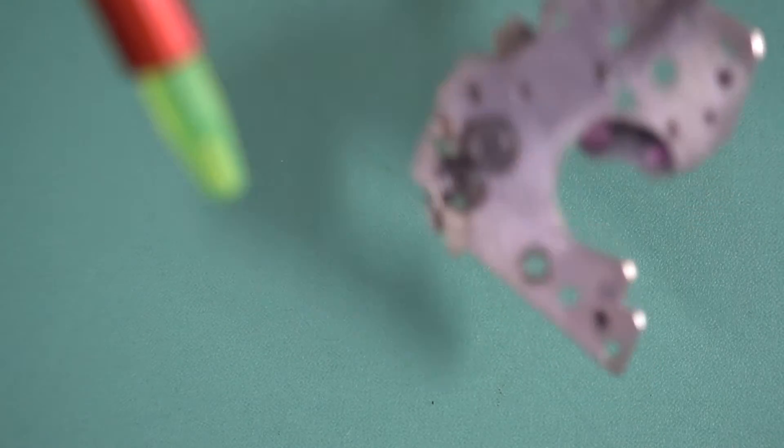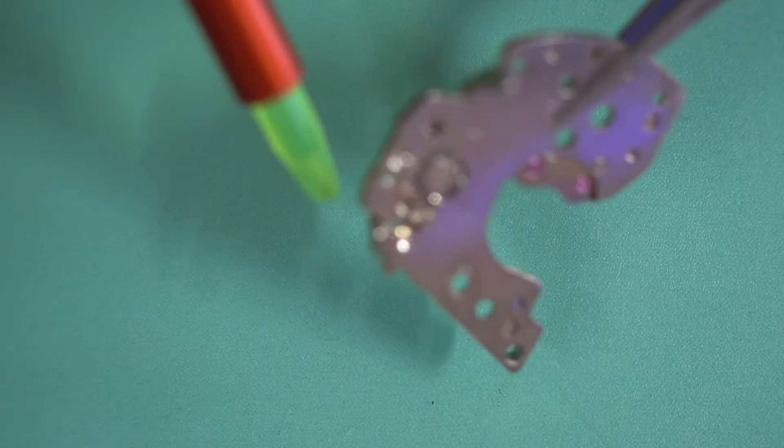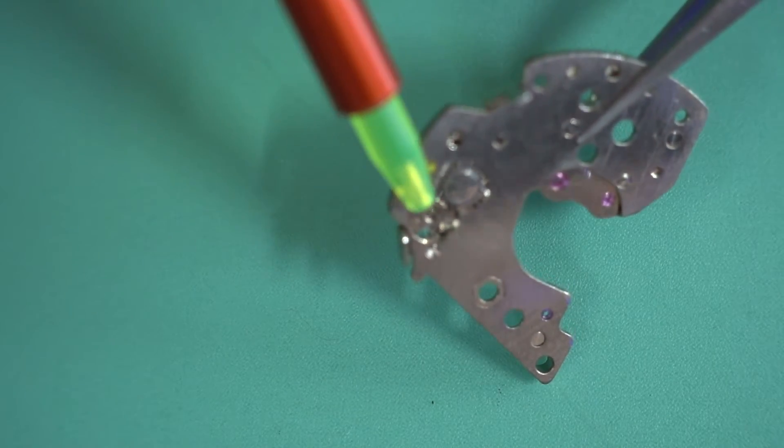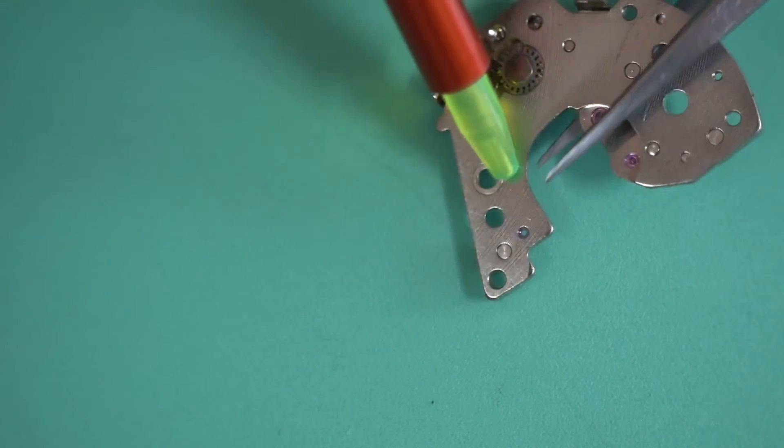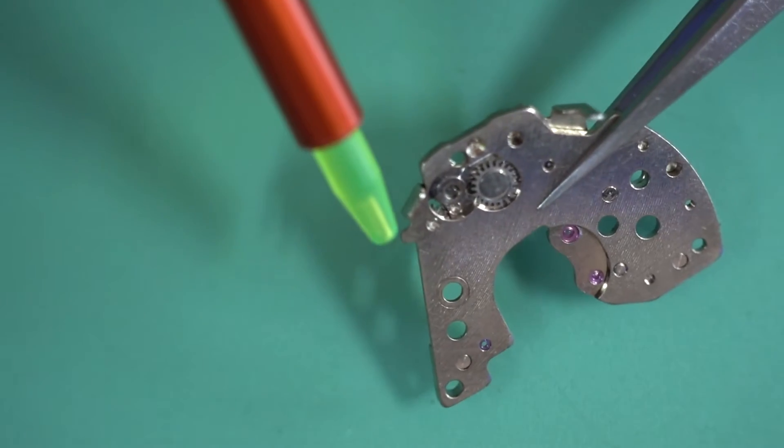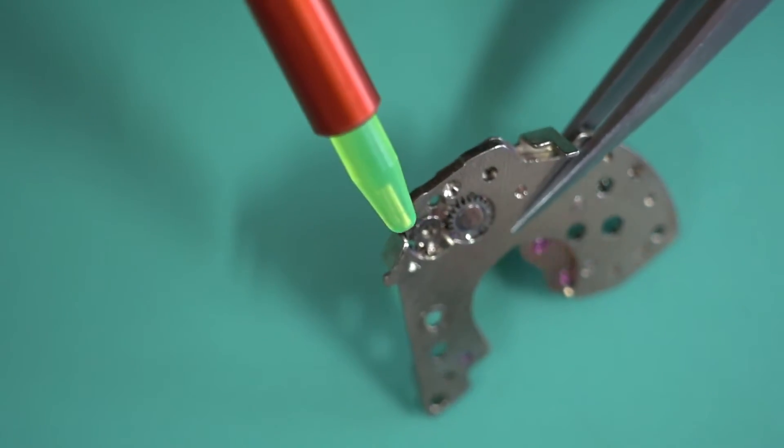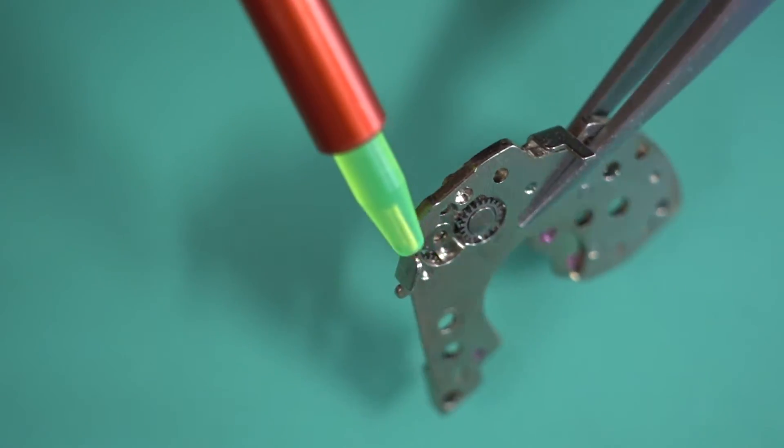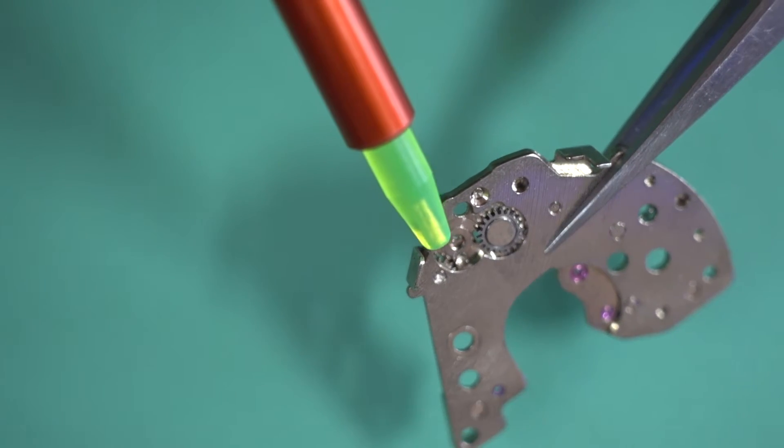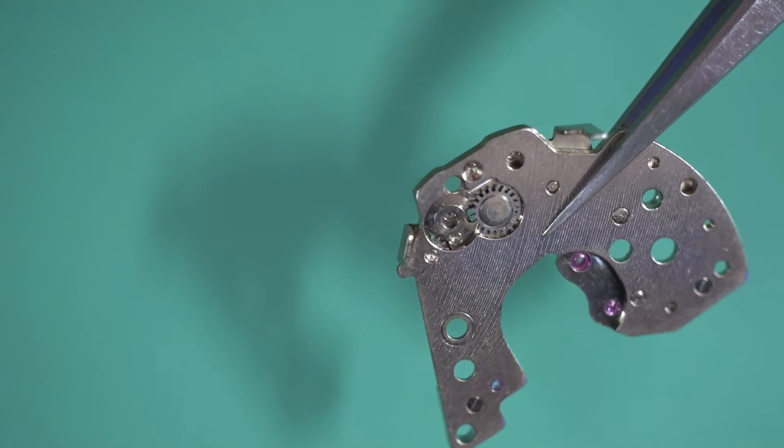So I think the better way to go is just to replace the plate. And if you look at the bottom side of the plate on this guy here, which is the unmolested one, you will see that the rivet, just at a bit of an angle here so it's a bit tricky, the rivet is actually just sitting below the surface there so it's not going to interfere with the intermediate wheel that goes in there.